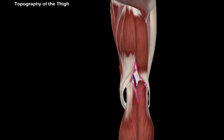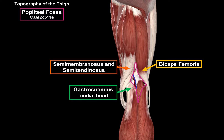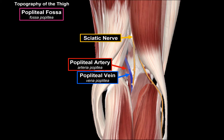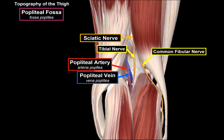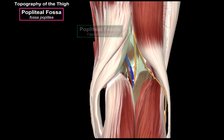Now let's turn the leg around and talk about the popliteal fossa. The popliteal fossa is bordered by muscles on the posterior aspect of the knee. It is bound superomedially by the semimembranosus and the semitendinosus, and superolaterally by the biceps femoris. Inferomedially, we have the medial gastrocnemius, and inferolaterally, the lateral gastrocnemius. Deep in the popliteal fossa, we find the popliteal artery, popliteal vein, and the sciatic nerve, which gives off the common fibular nerve. The popliteal fossa is covered by the popliteal fascia, which protects the vasculature located deep within.